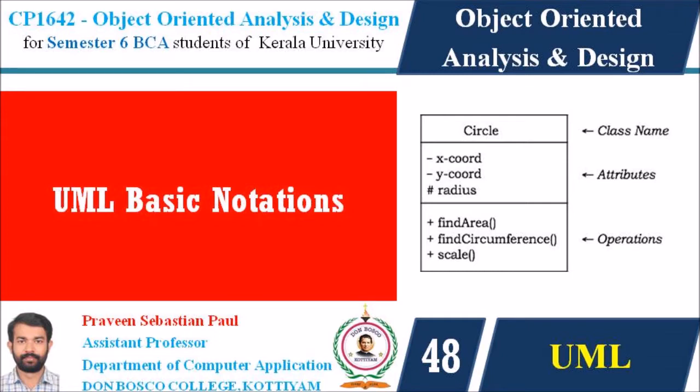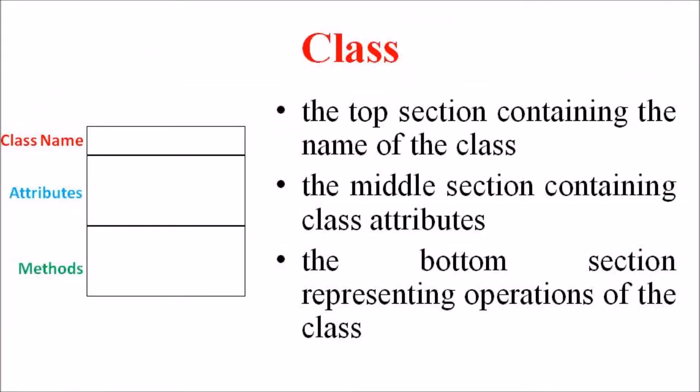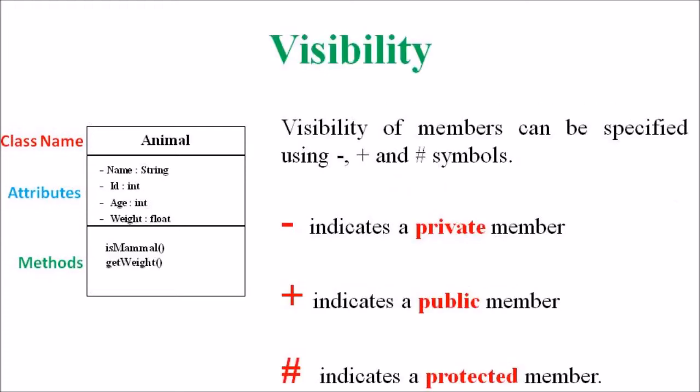A class is represented by a rectangle having three sections. The top section contains the name of the class, the middle section contains the class attributes, and the bottom section represents the operations of the class. The visibility of the attributes and operations can be represented as public, private, and protected. A public member is visible from anywhere in the system and in the class diagram it is prefixed by the symbol plus.